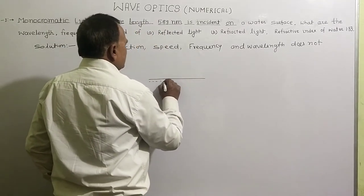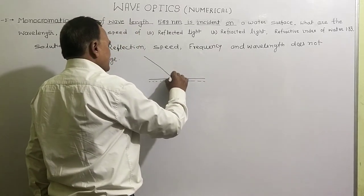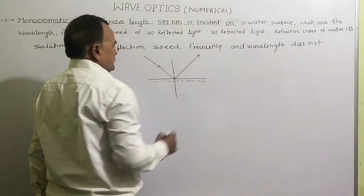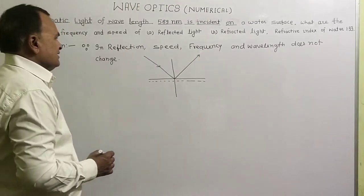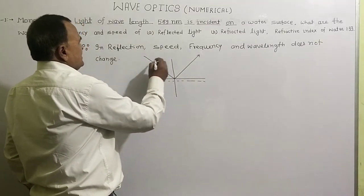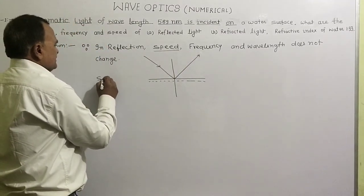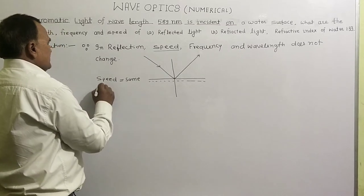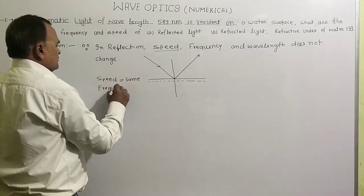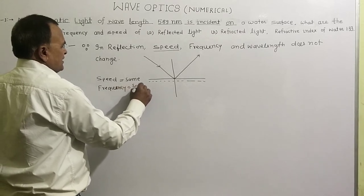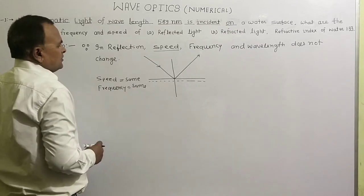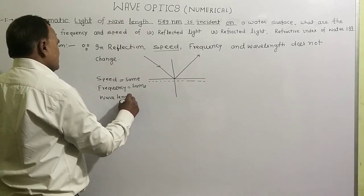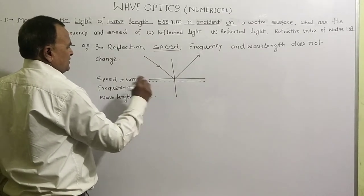We have a water surface. The incident light comes in, and this is the reflected ray. The speed is the same — no change. The frequency is the same — no change. The wavelength is the same — no change.